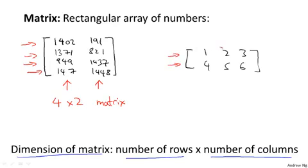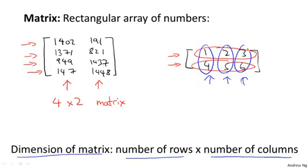This one on the right has 2 rows. That's the first row, that's the second row. And it has 3 columns. That's the first column, that's the second column, that's the third column. So this second matrix is a 2 by 3 matrix.